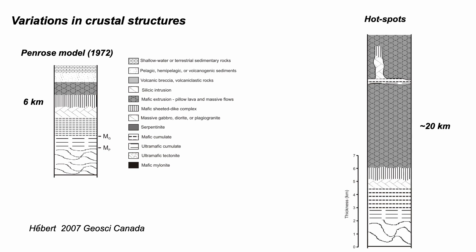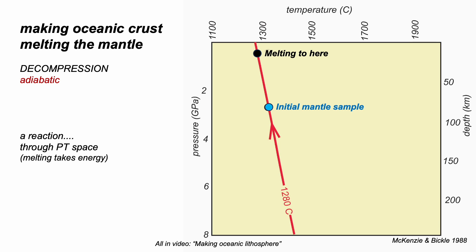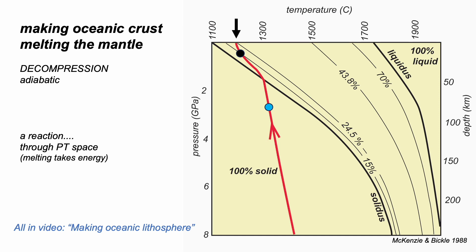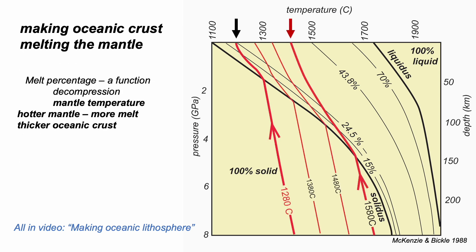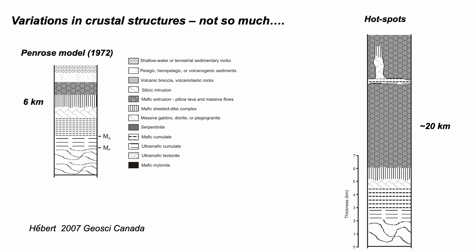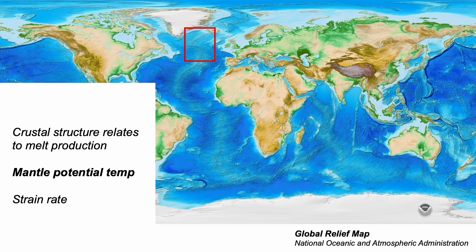Why the change in thickness? Upwelling mantle under mid-ocean ridges decompresses, and if the rocks do this quickly, they begin to melt, crossing a so-called solidus. In the scenario sketched here, about 20% of the mantle that does this will melt, creating a melt layer — oceanic crust — about six kilometres thick. This is the conventional way oceanic crust is formed. But if the upwelling mantle is hotter than normal, the same process generates more melt, so thicker crust. Thick oceanic crust is formed above hotter mantle — hot spots. So one way of creating different thicknesses of oceanic crust is to start with mantle at different temperatures.